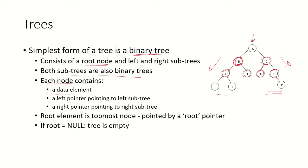Each node contains a data element, a left pointer pointing to the left subtree, and a right pointer pointing to the right subtree. For example, if we have root node A, it will have a left pointer pointing to node B and a right pointer pointing to node C. Similarly, B will have its value, the value of node B.